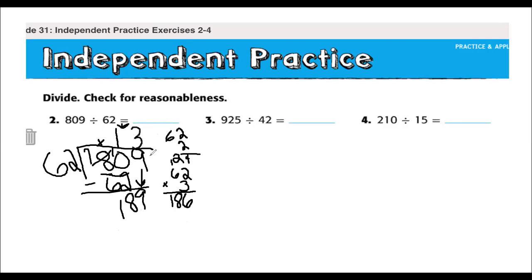So I'm going to write the 3 over the ones place. 3 times 62 is 186. Now I'm going to subtract 189 minus 186, gives me a remainder of 3. So our answer to 809 divided by 62 is 13 remainder 3, and we're going to stop right there. There's other strategies you can use to find out if this comes out without a remainder, but for fifth grade standard you're going to stop right here.